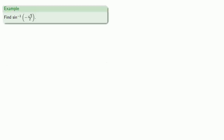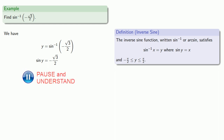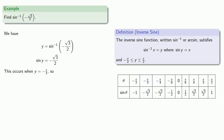Let's find the inverse sine of negative square root 3 over 2. Definitions are the whole of mathematics; all else is commentary. If y is the inverse sine of negative square root 3 over 2, then the sine of y is negative square root 3 over 2. Since y must be between minus pi over 2 and pi over 2, we see that the angle whose sine is negative square root 3 over 2 is minus pi thirds. So the inverse sine of negative square root 3 over 2 is negative pi thirds.